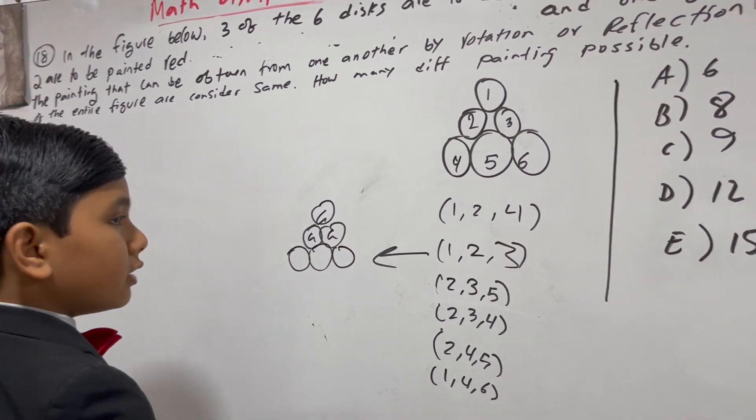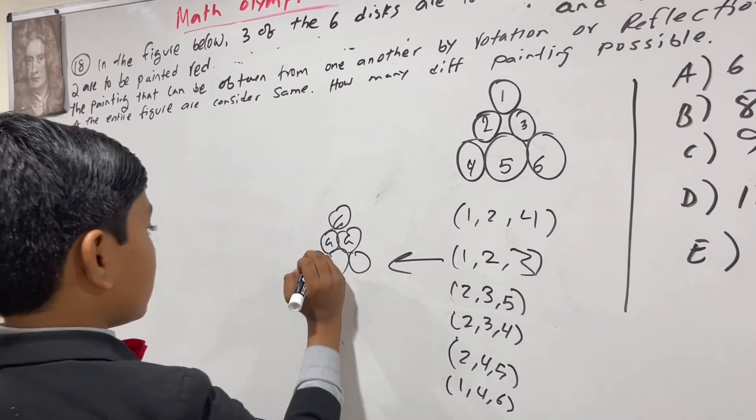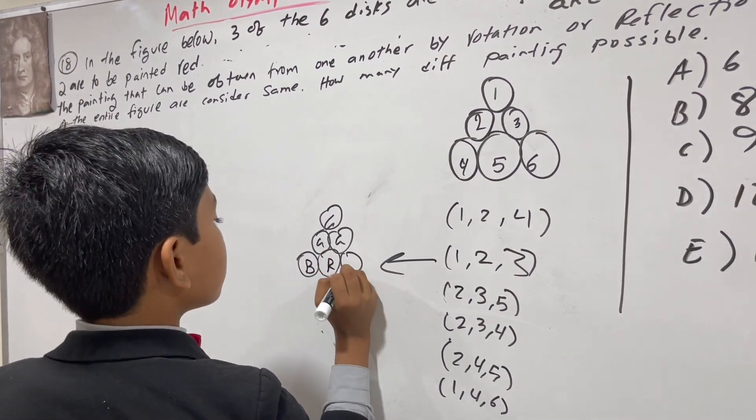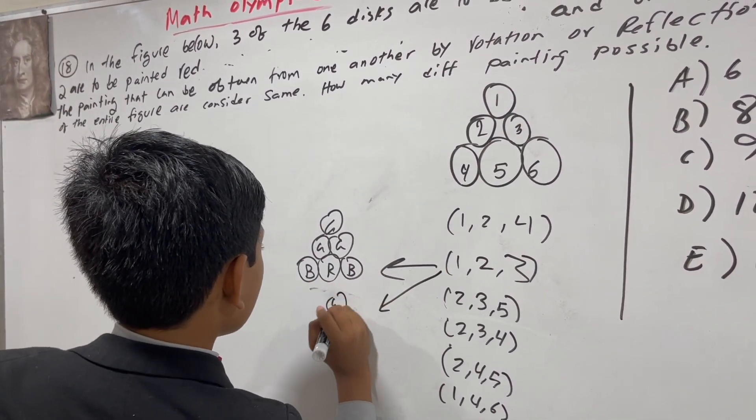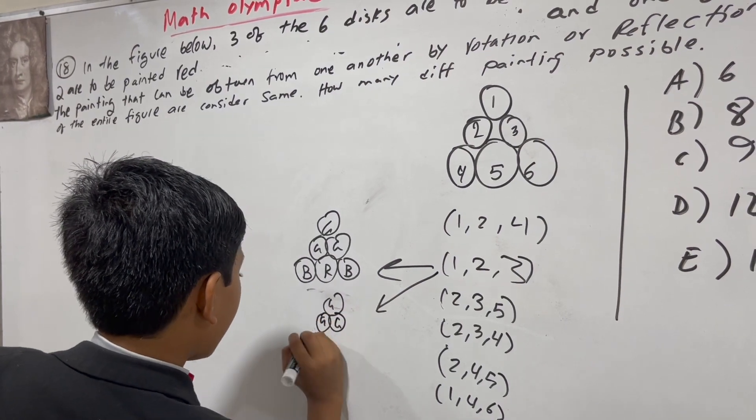However, you can have 2 arrangements here. You could have blue, red, blue over here. Or, you could have blue, blue, red.